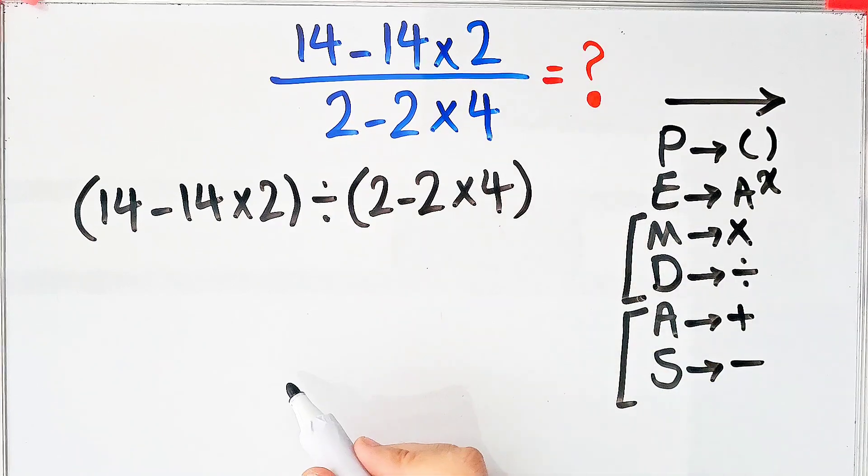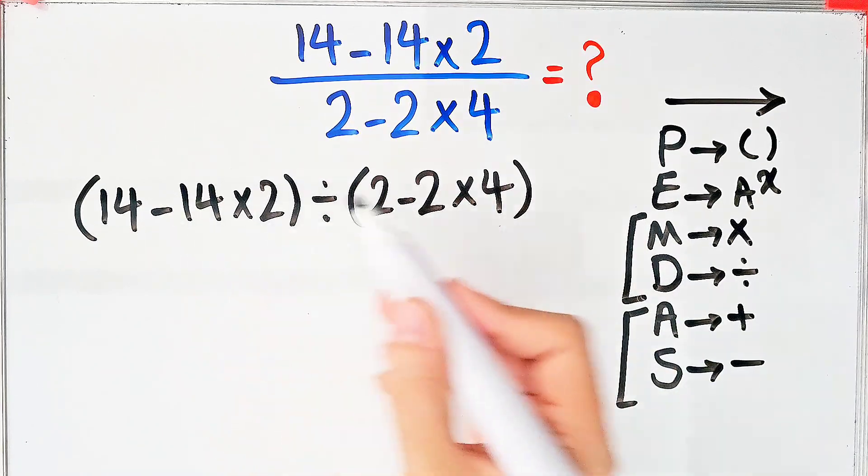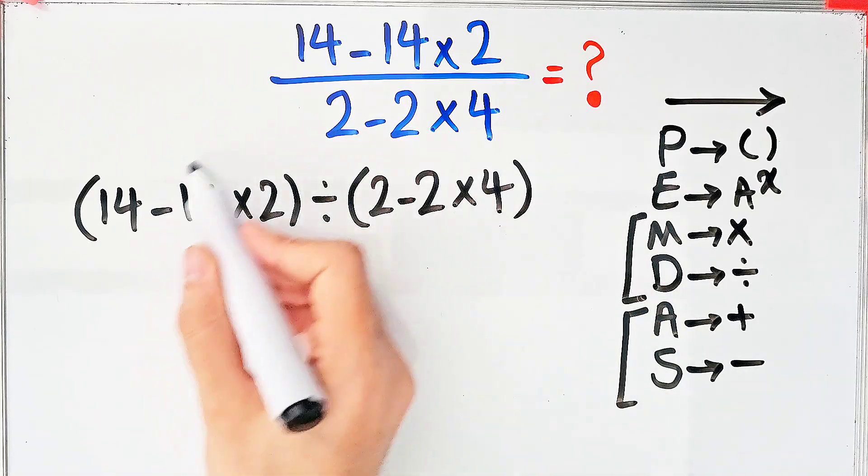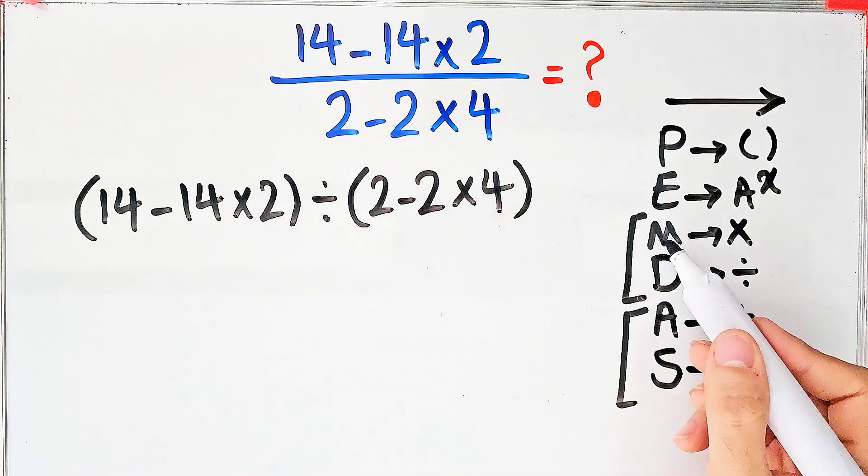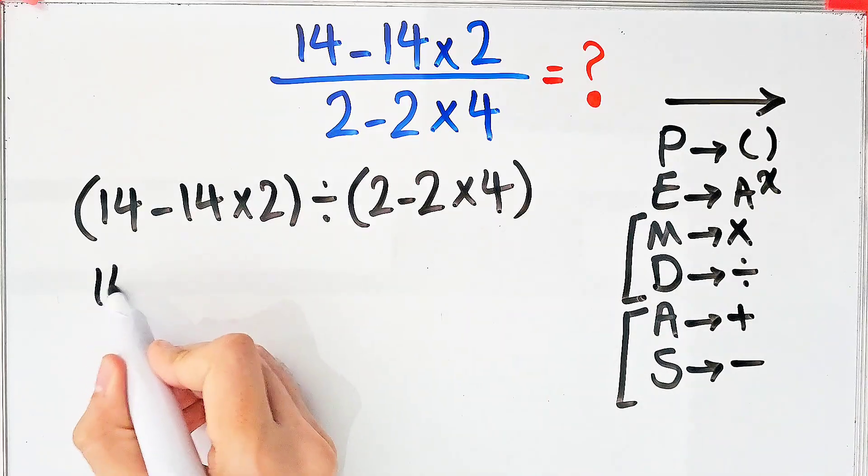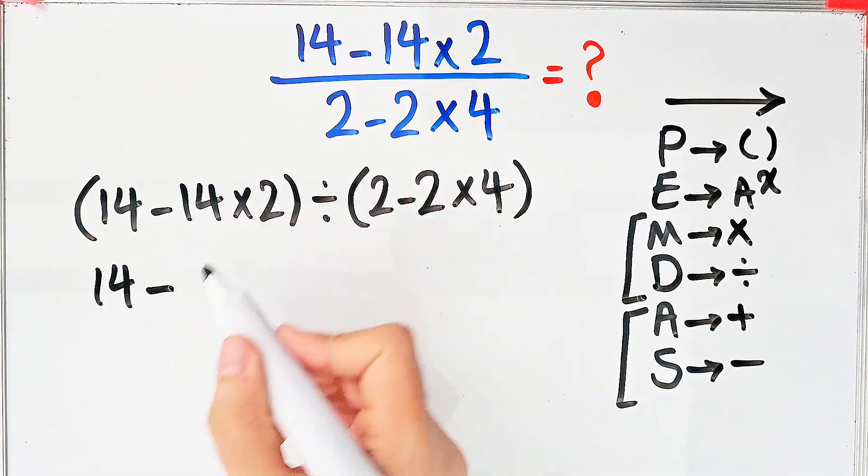First we simplify the parentheses. Inside the parentheses, we have subtraction and multiplication. First, we simplify the multiplication because multiplication has higher priority than subtraction. We have 14 minus 14 times 2, which equals 28, inside the first parentheses.